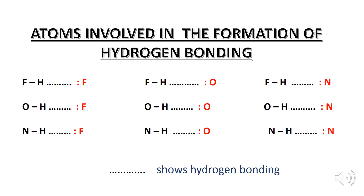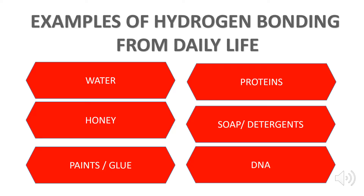Here, the dotted line shows the hydrogen bonding. Examples of hydrogen bonding from our daily life include water as the most common example, honey, paints or glue, protein, soap and detergents that we use, and DNA.